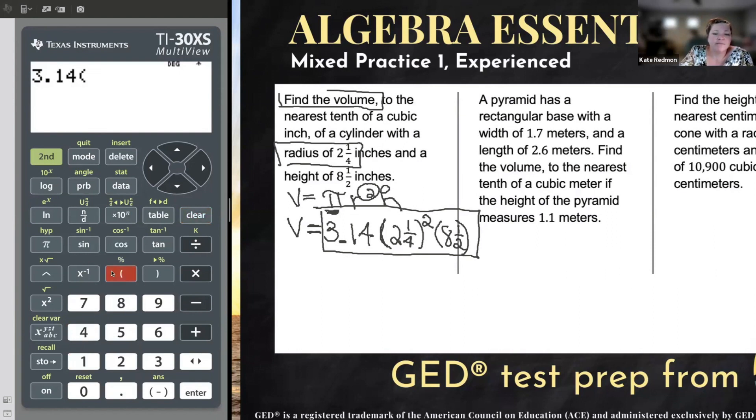3.14 times. I want a mixed number, part whole number, part fraction. So I need the U N over D key, which is in green. So second. And then I can get U N over D. Type in two. Arrow around to type the rest of my fraction in. Arrow out before I close parentheses and square. Open up another parentheses, and I want another mixed number, eight and a half. Close parentheses.